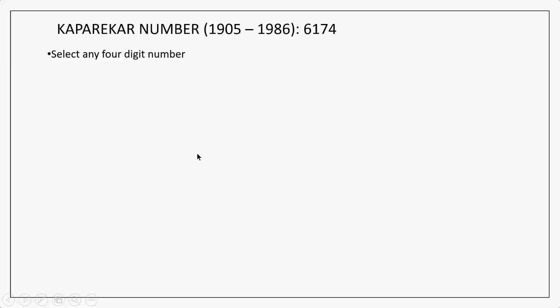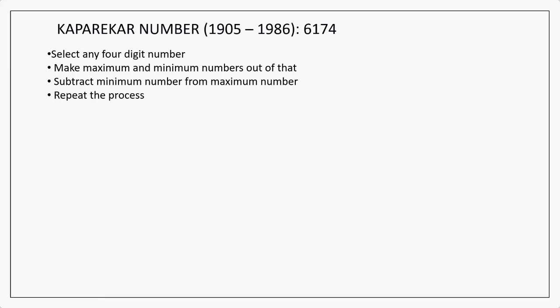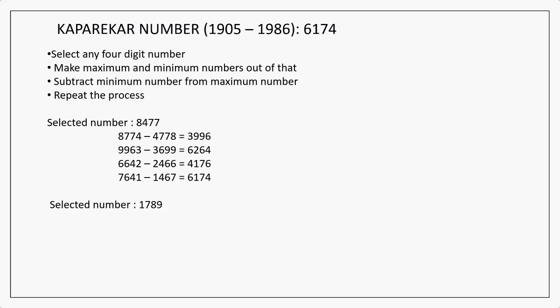Now we go to Kaprekar numbers. Kaprekar is a simple person from Mumbai, used to travel to Dombivali every day for his job. While travelling from train, he has done lot of thinking about number theory. There is a number called Kaprekar number 6174. Select any 4 digit number. Take the maximum and create a maximum and minimum number out of that. Subtract minimum number from maximum. Then you will get another number. Repeat the process. You will end up at 6174. Of course, the condition is all digits should not be repeated - you will have at least 2 or 3 different digits in the number. You will get this 6174.